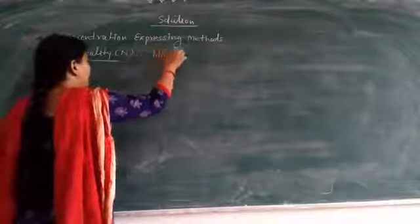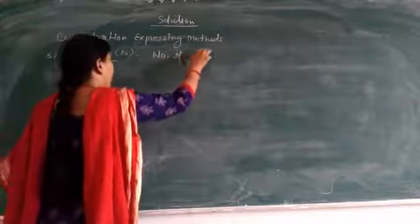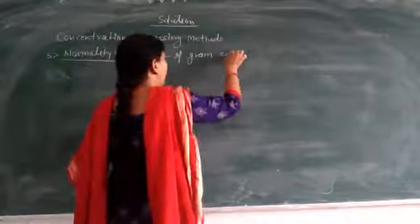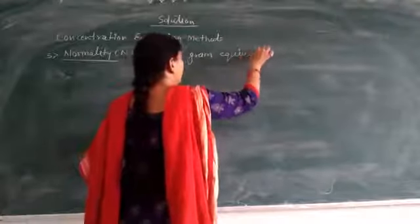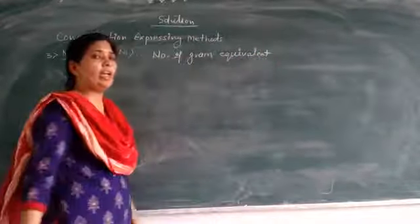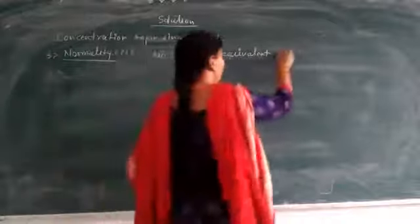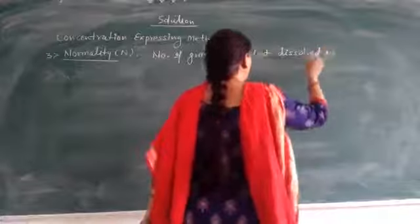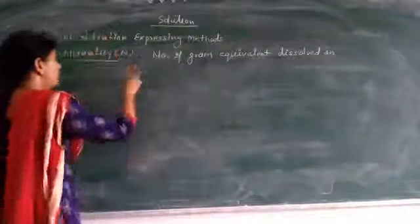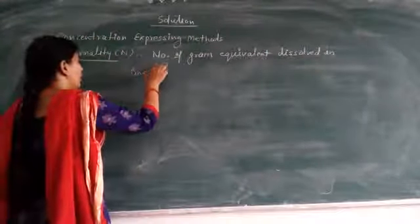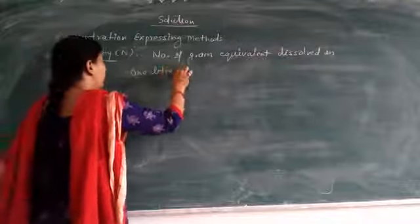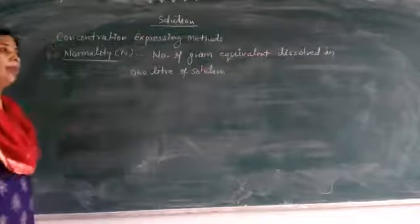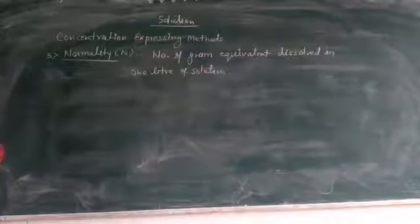Normality is defined as the number of gram equivalents of solute dissolved in one liter of solution.